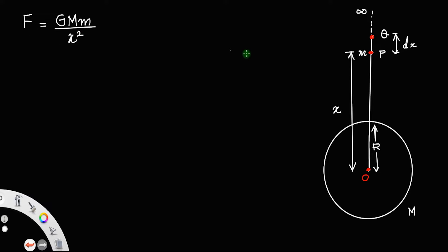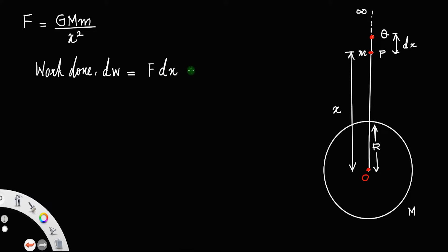Now, using this force, if we move this mass through the distance dx from P to Q, then the work done dW is equal to force into displacement, that is G·M·m divided by x squared, into dx. The work done is equal to F·dx, that is G·M·m by x squared dx.